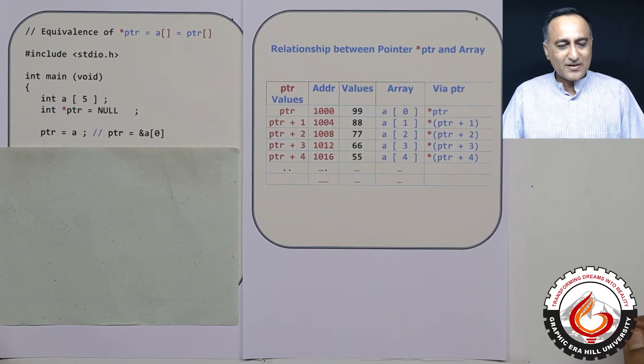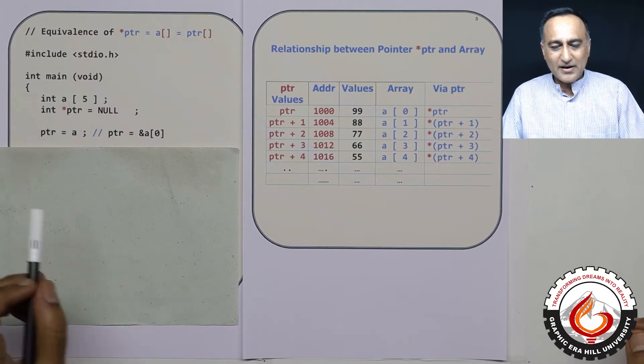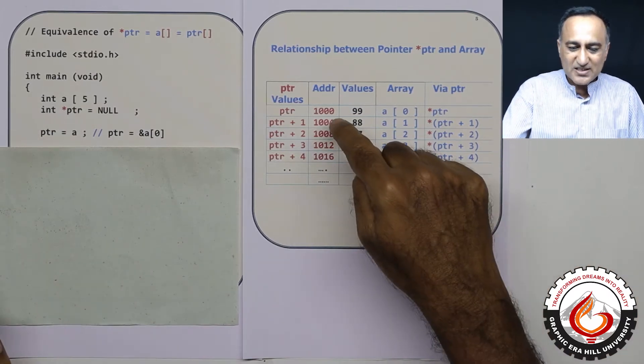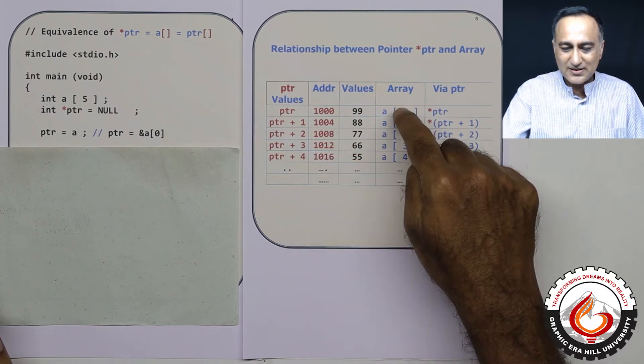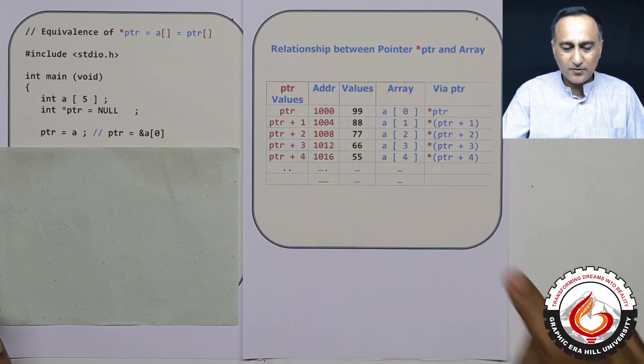First thing I have done is I have declared an integer array a with five numbers. So this is the same as in the previous video, these are the addresses, these are the values, this is the array a of 0, 1, 2, 3 and 4.